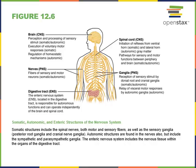The digestive tract contains an enteric nervous system, which is a subdivision of the peripheral nervous system because it is not found in the brain or spinal cord. However, it differs from the rest of the PNS because it contains some control centers, making it capable of operating independently.